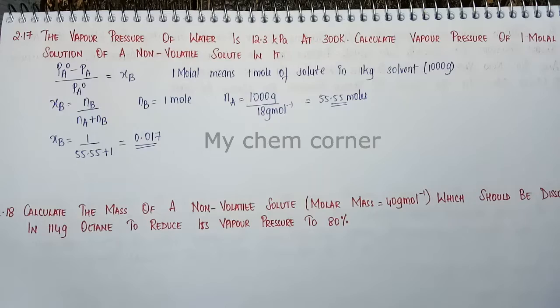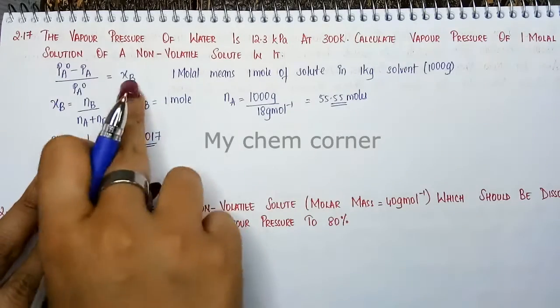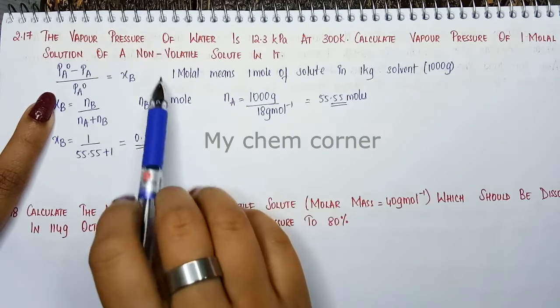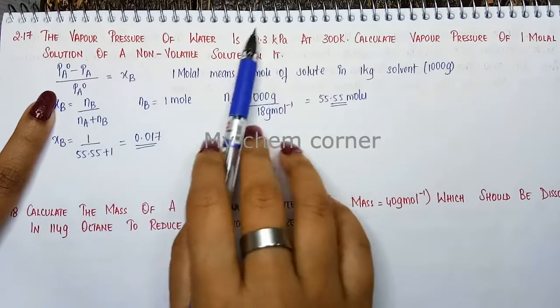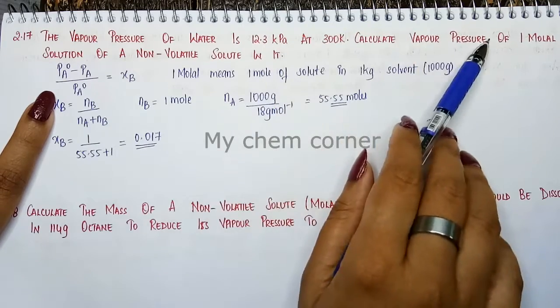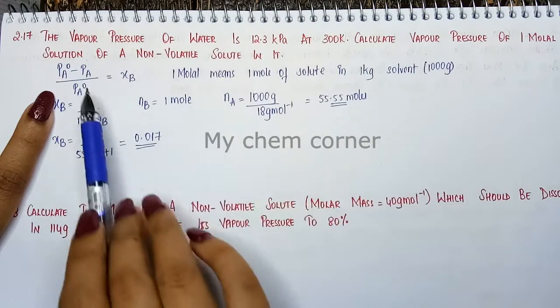Now, that is the right side of the equation. What about the left side? P_A0 is given as vapor pressure of water, 12.3 kilopascal. We need to calculate what is the vapor pressure of the non-volatile solute, which is P_A.